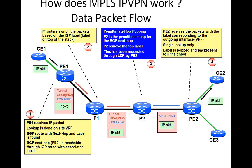So it goes through the next router, P1, which is a core router. He's just going to look at the tunnel label and switch it to PE2. If you're familiar with the MPLS concept, there is something called penultimate hop popping, which can remove the tunnel label if the egress is just one hop away. So that can possibly be configured or it may not be configured — this is up to the service provider.